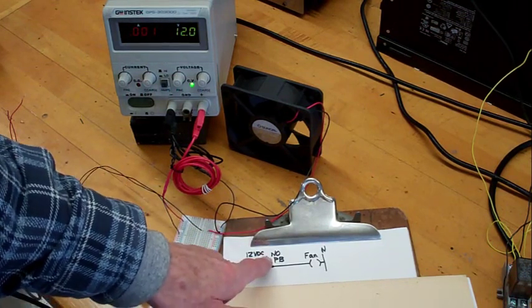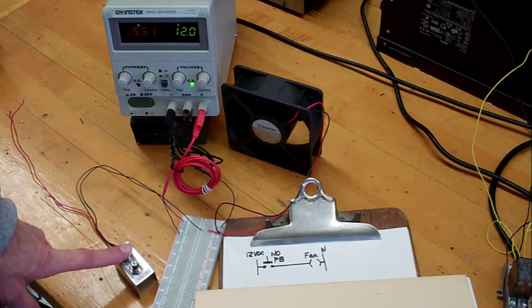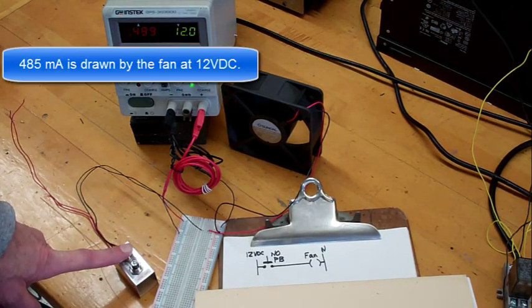When the normally open push-button switch is depressed, the fan is then connected to its 12 volt supply.